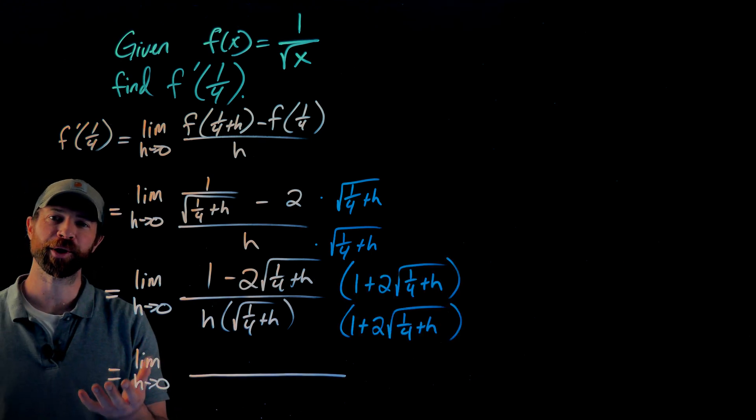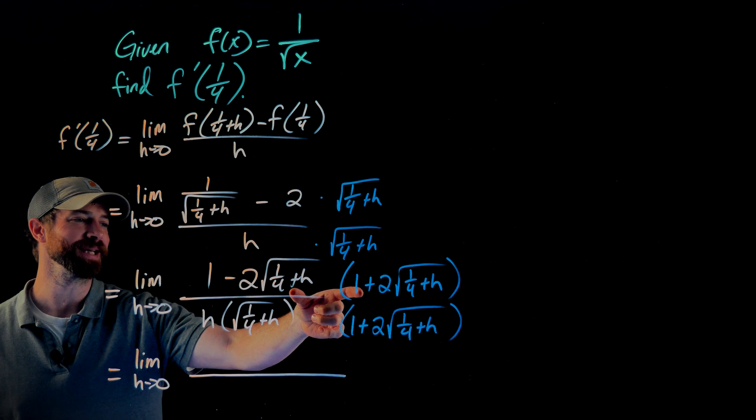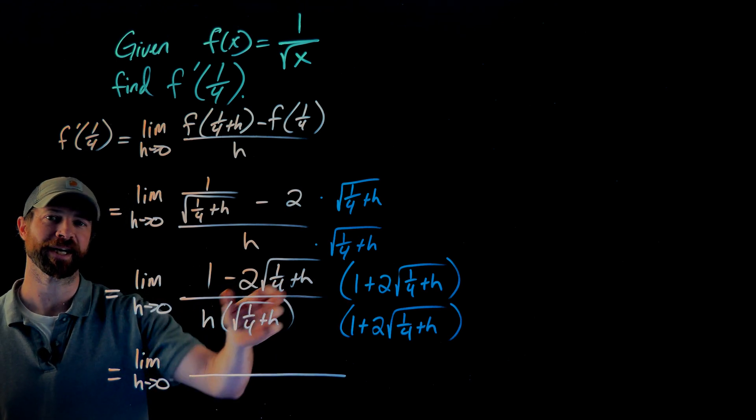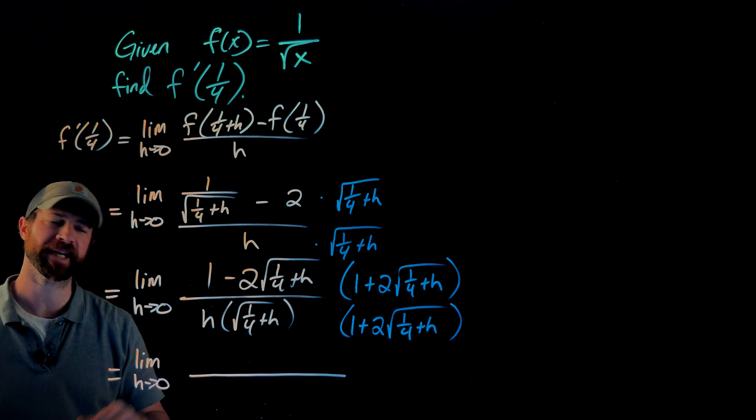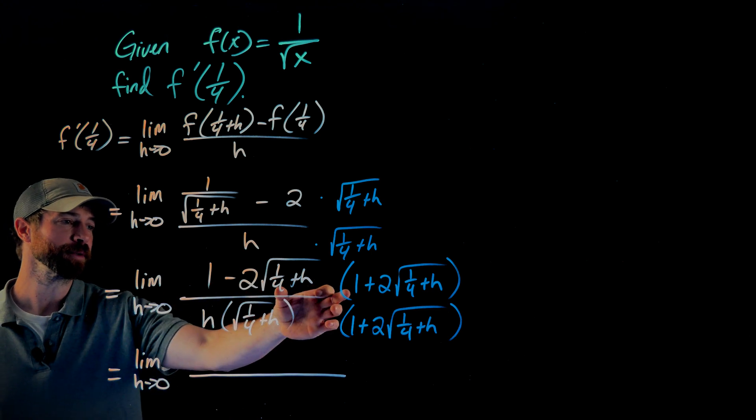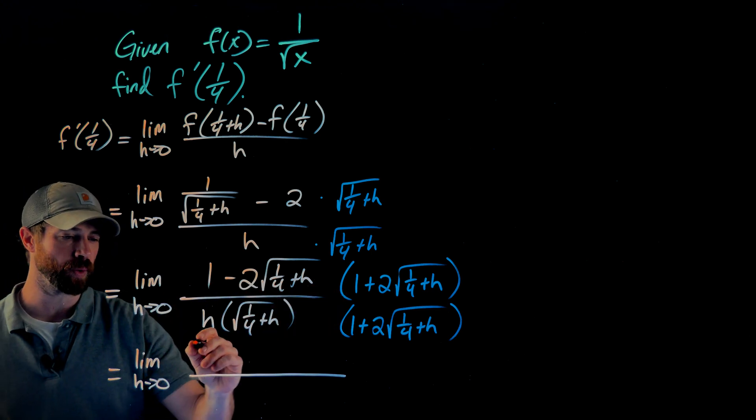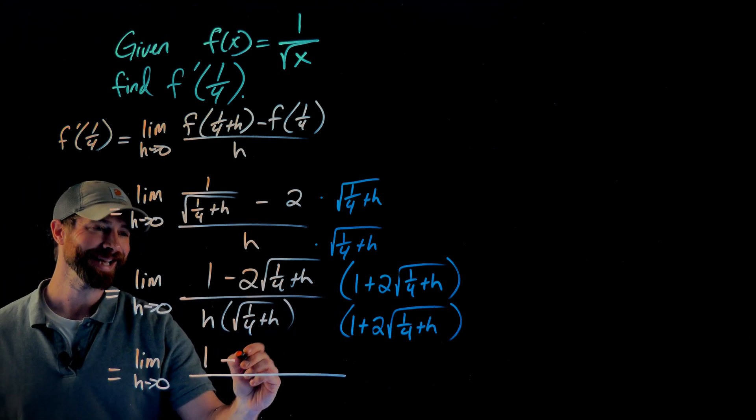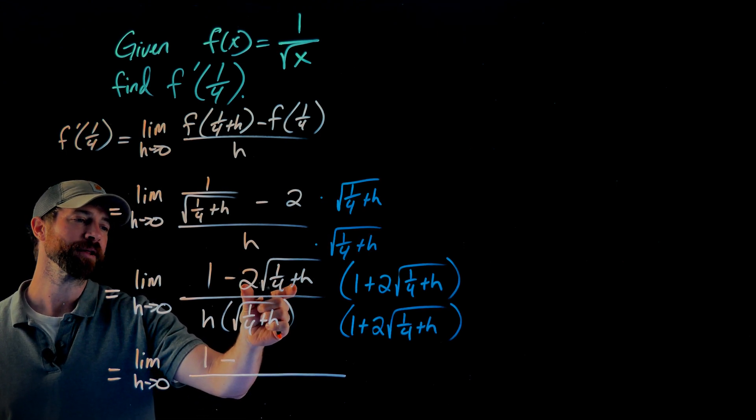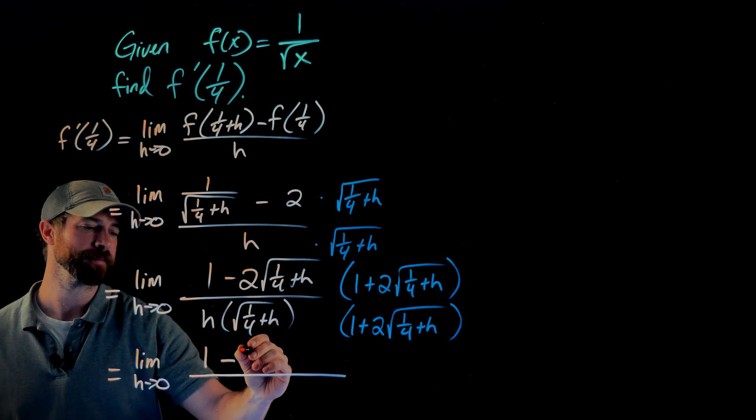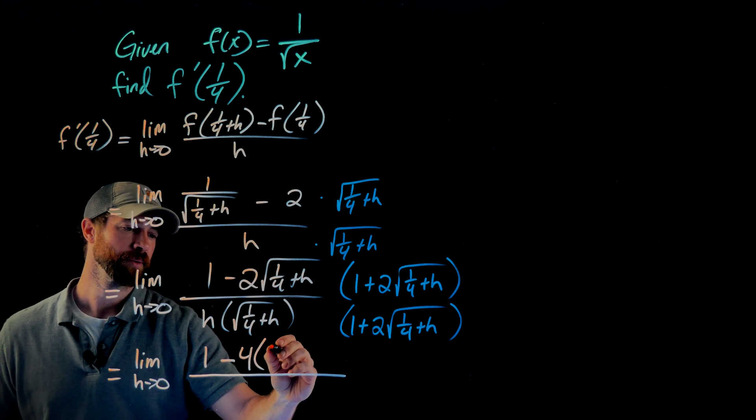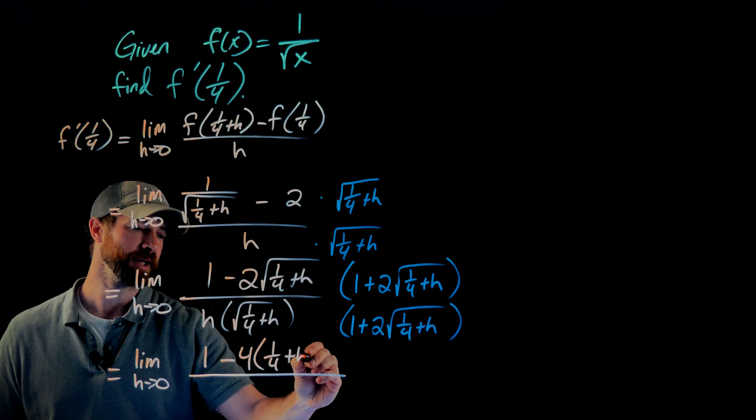When I multiply by the conjugate, what the result of this will be is the first term squared minus the second term squared. This is the difference of squares or the multiplication of conjugates. So the numerator is where things will work out really nice. When I multiply these together, I'll get 1 squared, which is 1, minus 2 times the square root of 1/4 plus h squared. When I square this term, I'm going to get a 4 from this 2. And when I square this factor, I simply just get rid of the square root, which will give me 1/4 plus h.